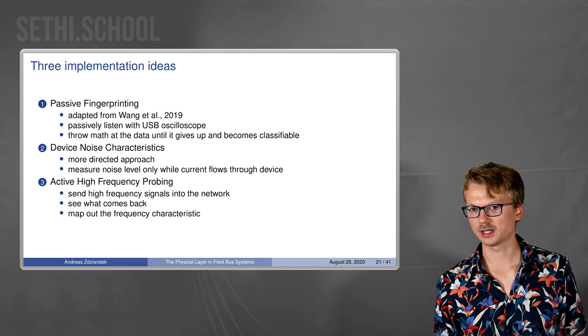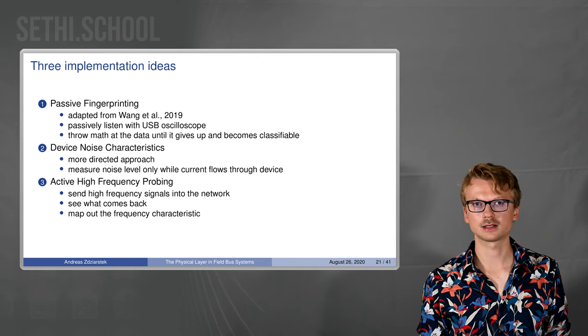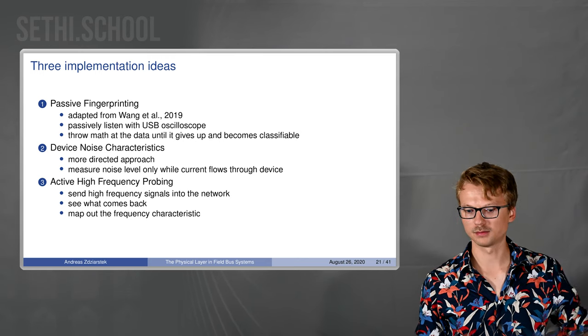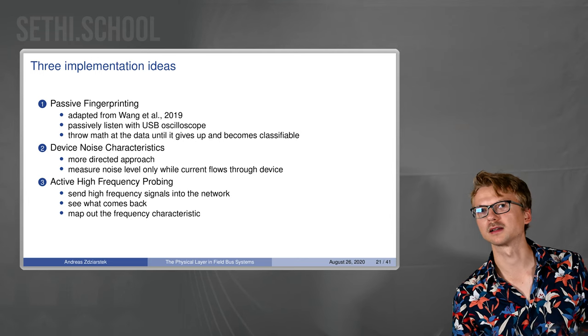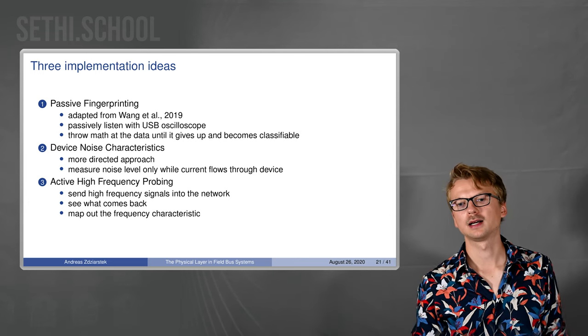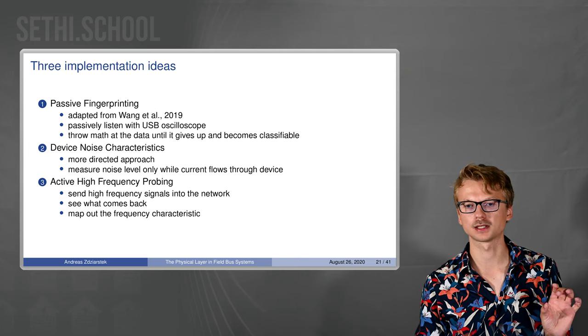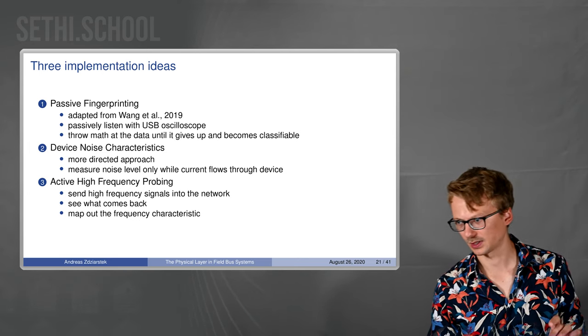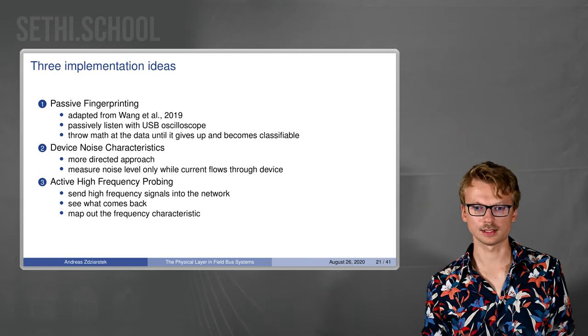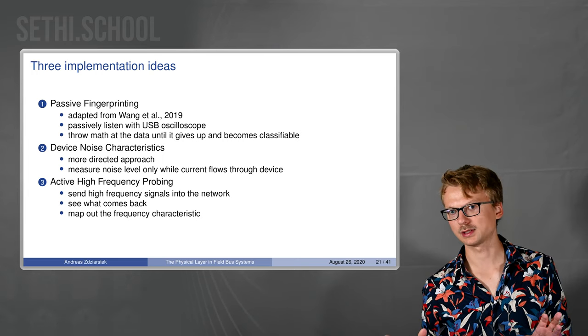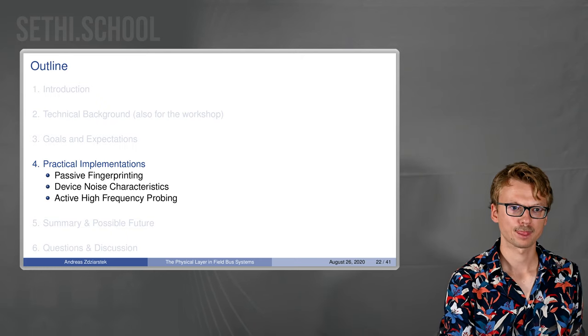The third implementation idea is this active probing thing I was talking about. In this case we just put high frequency signals into the network, meaning we basically send something that would normally go out an antenna, we send it over the wire. The good thing about that is that the amplitude is very low, the frequency is very high, and basically it does not register next to the normal KNX traffic. If you do that for a series of frequencies then we can map out a frequency spectrum of the network.